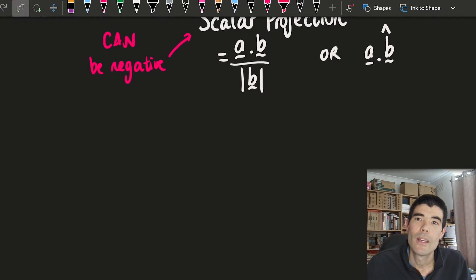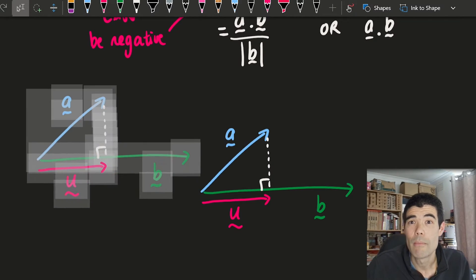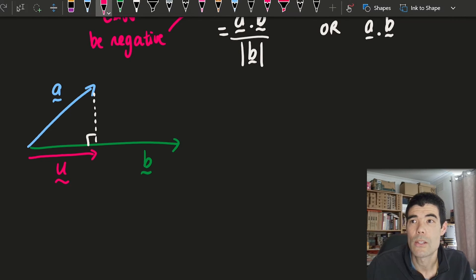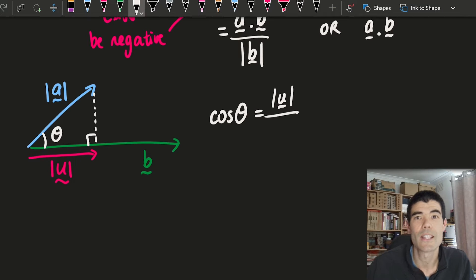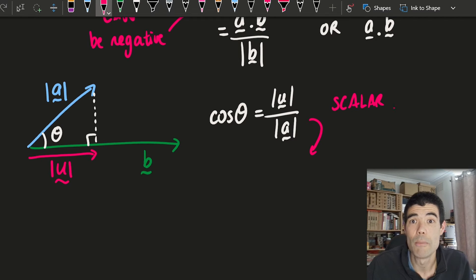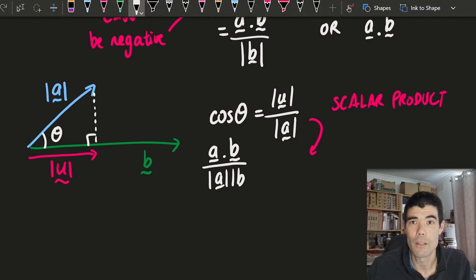So where does this formula come from? Imagine we've got the same diagram and we're trying to find the scalar projection, the length of u there. If we know the length of a and the angle between the two vectors, we could find that using trigonometry, using cosine as adjacent over hypotenuse. Now, we also have a handy formula for cosine of theta which comes from the scalar product. Scalar product, a dot b, is length of a times length of b times cosine theta. So we can replace cosine theta in the formula there with a dot b over length of a times length of b.